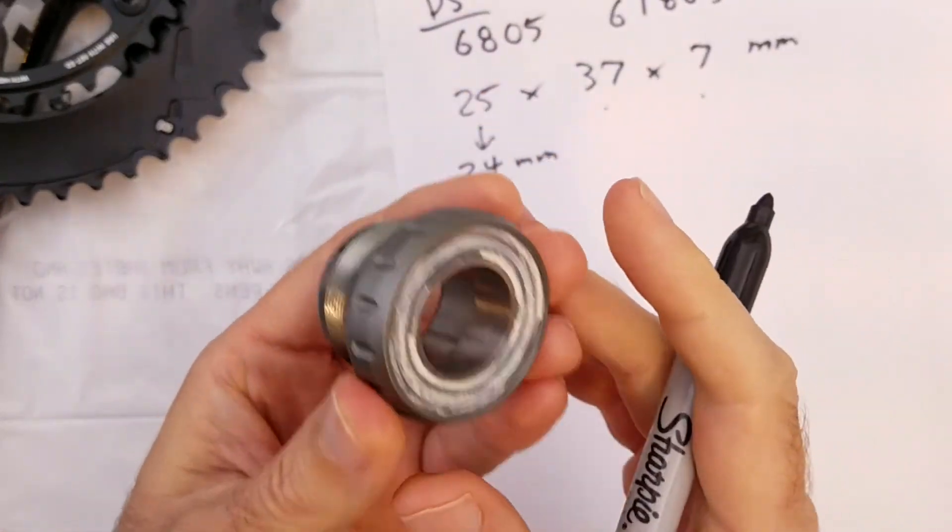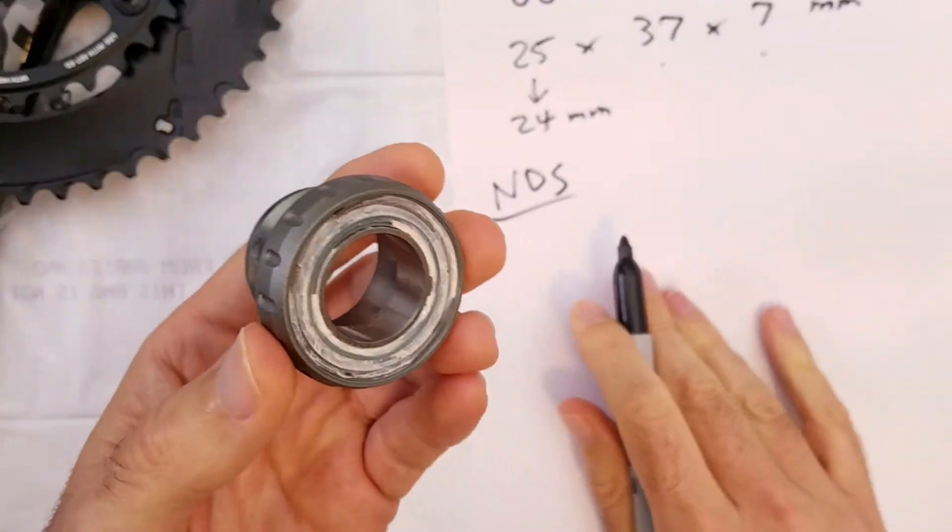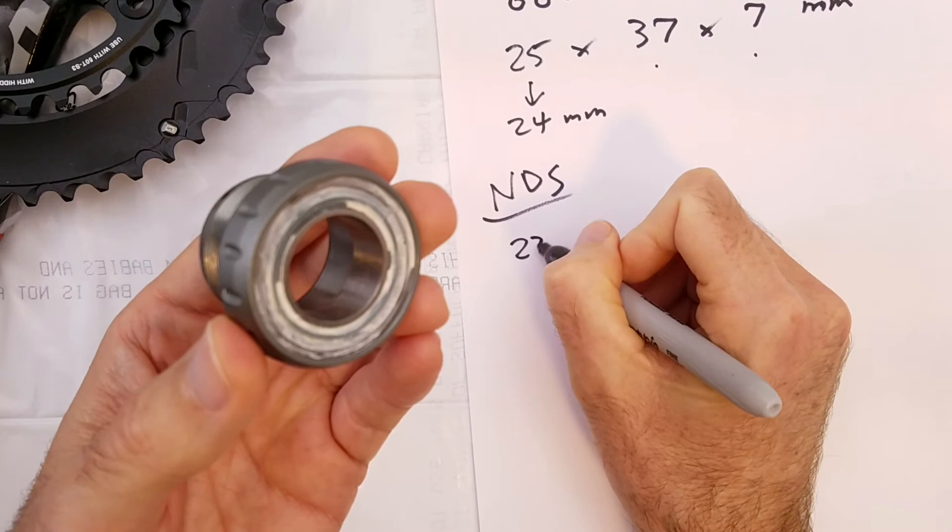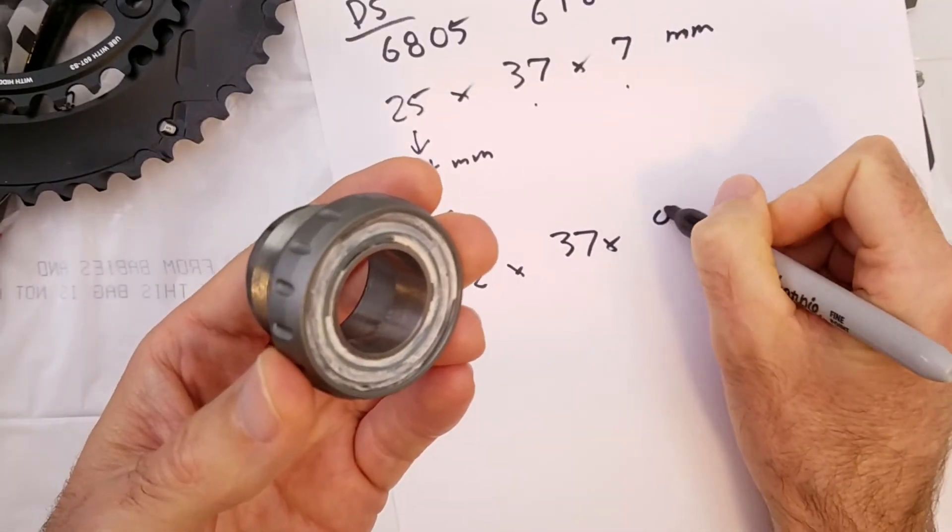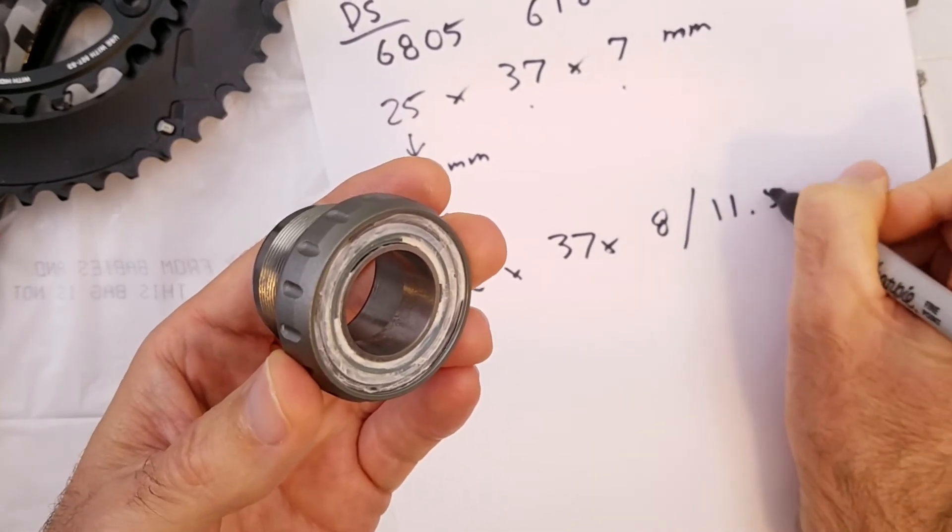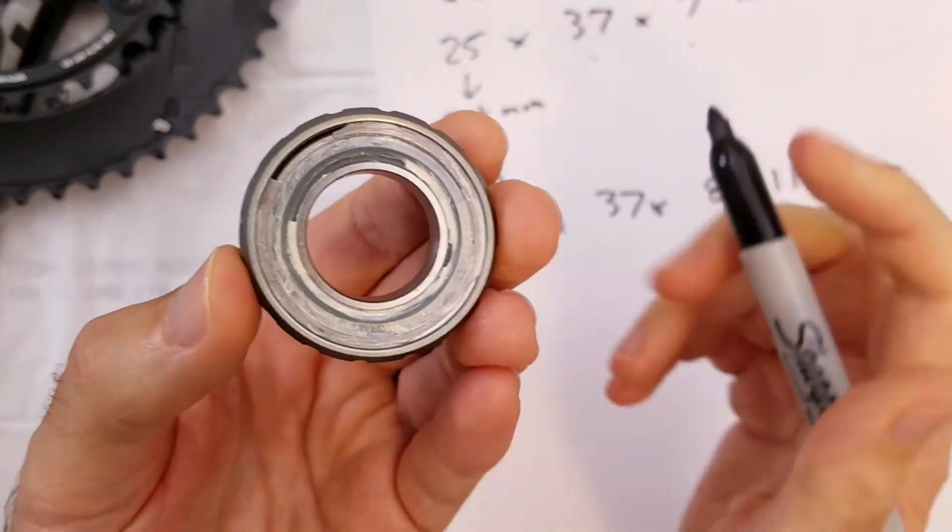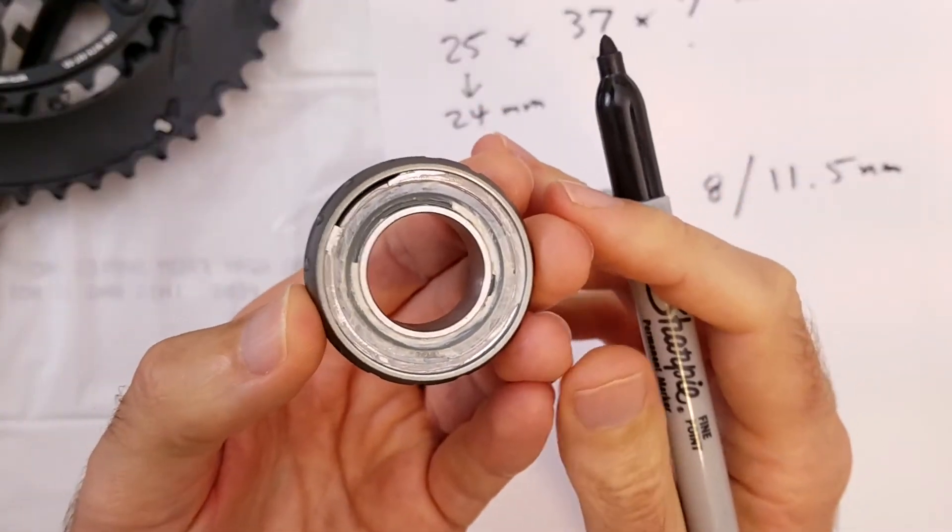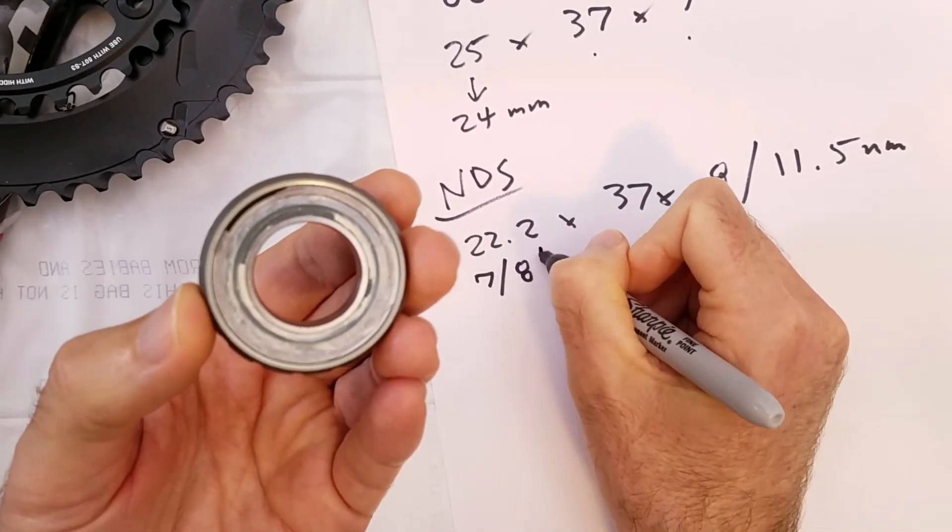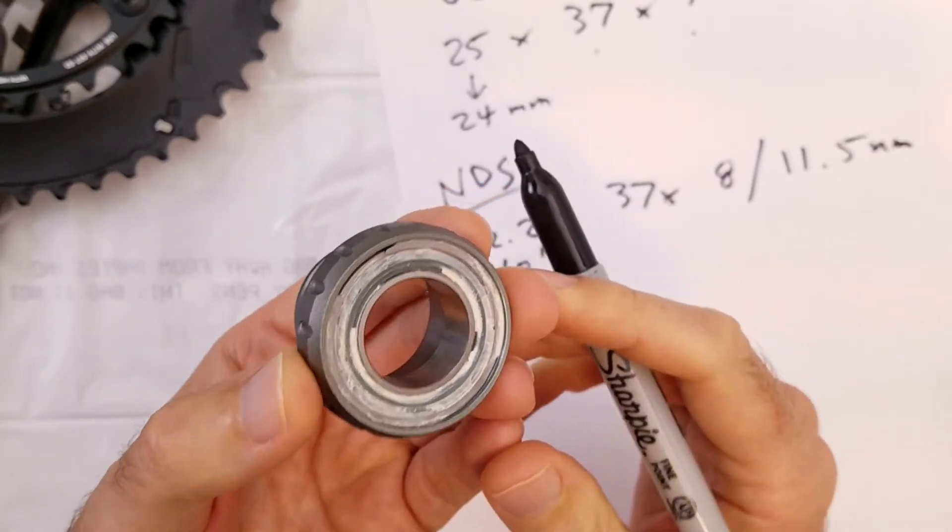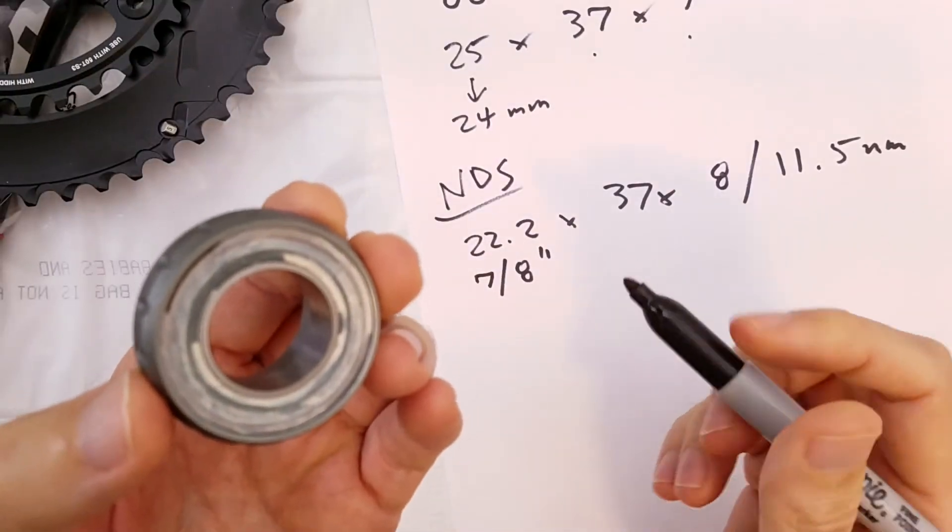This bearing on this side is not a standard size bearing. It measures 22.2 by 37 by 8 slash 11.5 millimeters. So the inside diameter of this bearing is 22.2 millimeters. Now this is very strange. It's very close to seven-eighths of an inch. I do not know why SRAM makes the inside diameter, the bore diameter so large. It's very strange.